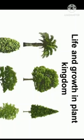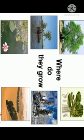The plant kingdom means the natural surrounding where plants live and grow. Plants grow almost everywhere on the earth. We can see plants in the plains, hills, deserts and also in and under the water.